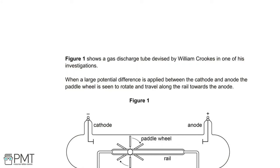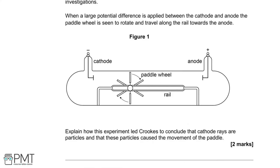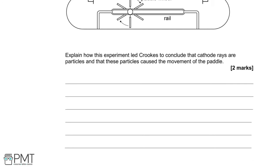Figure 1 shows a gas discharge tube devised by William Crookes. When a large potential difference is applied between the cathode and anode, the paddle wheel is seen to rotate and travel along the rail towards the anode. The question asks us to explain how this experiment led Crookes to conclude that cathode rays are particles and that these particles cause the movement of the paddle.